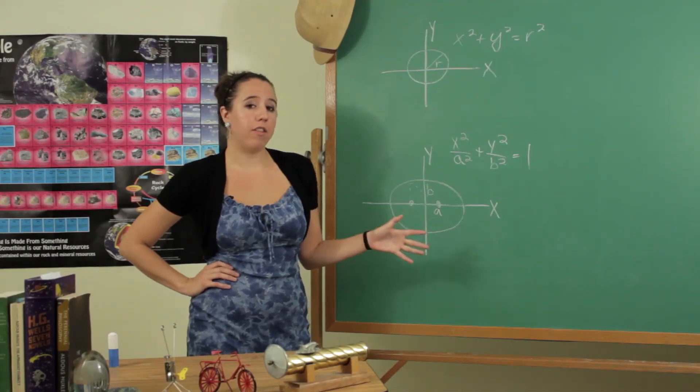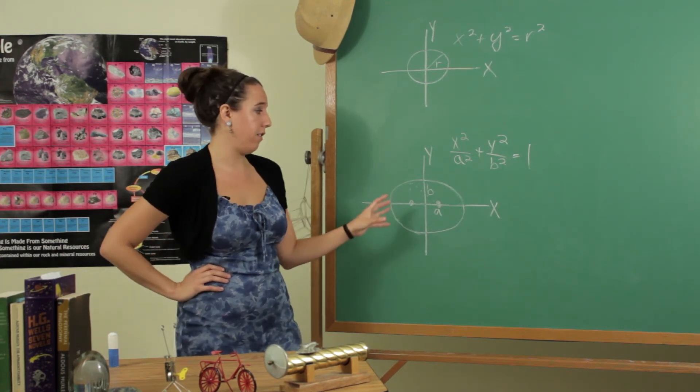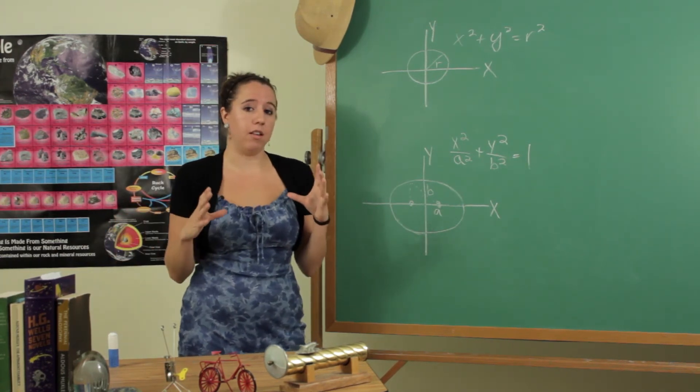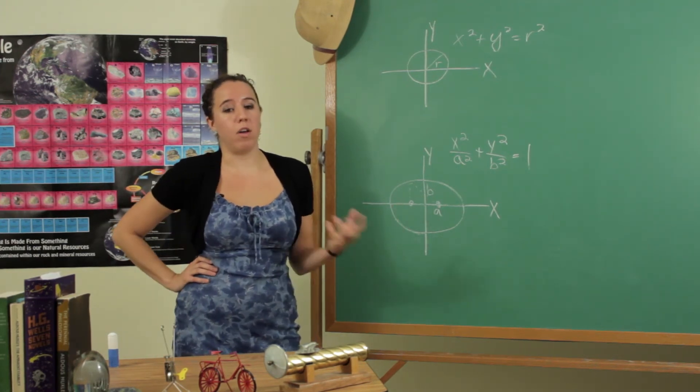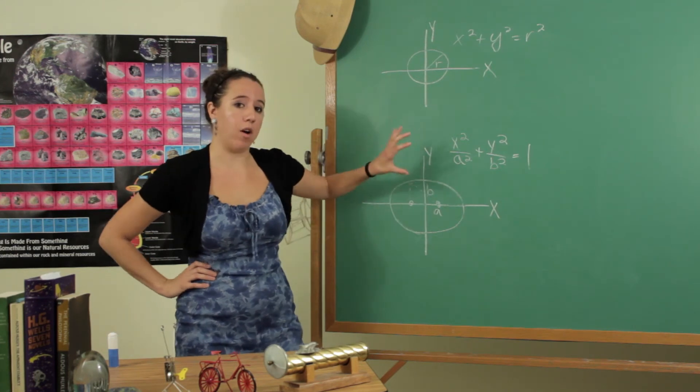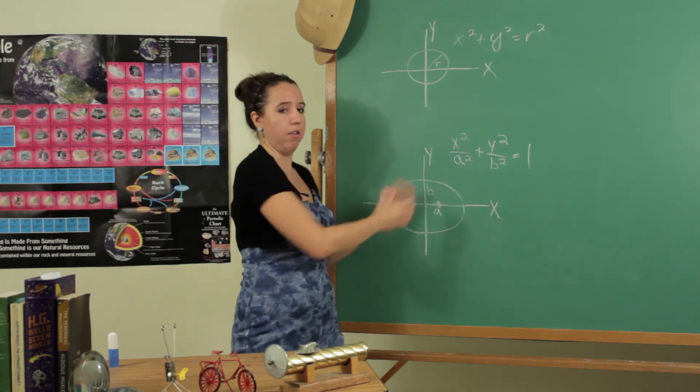So the equation that I've given you here is a very generalized case. I mean, it's a pretty standard looking ellipse that's centered at the origin.